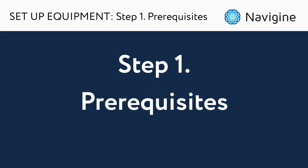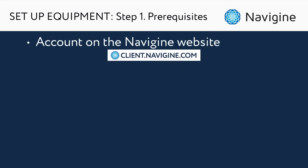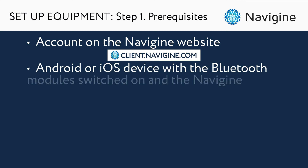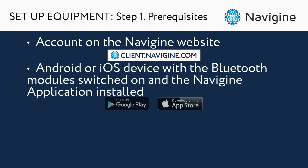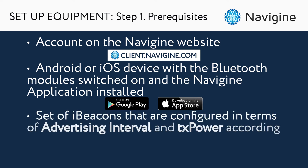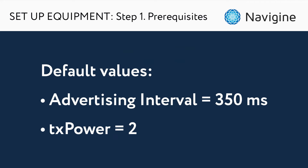Before we begin, you should have an account on the Navigin website with implemented maps, an Android or iOS device with the Bluetooth module switched on, and the Navigin application installed. You also need a set of iBeacons configured in terms of advertising interval and TxPower according to our documentation. The default values are 350 milliseconds for the interval and 2 for the TxPower.